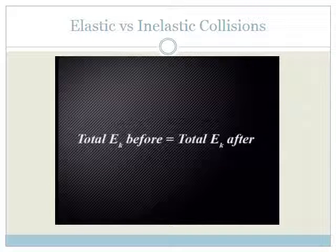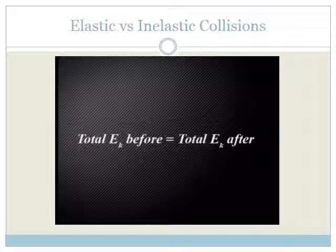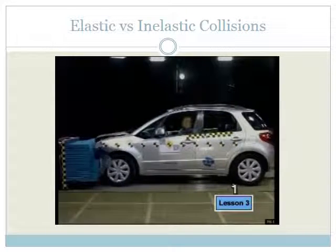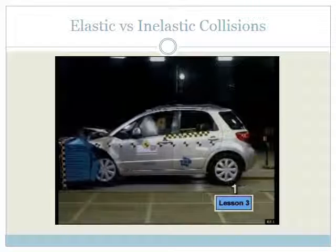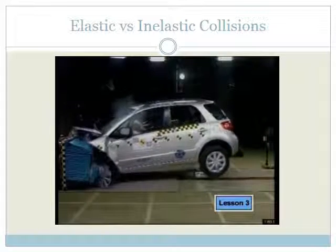An elastic collision is a collision in which kinetic energy is conserved, so the total kinetic energy before the collision is equal to the total kinetic energy after the collision. Kinetic energy is the energy that an object has as a result of its motion or movement.